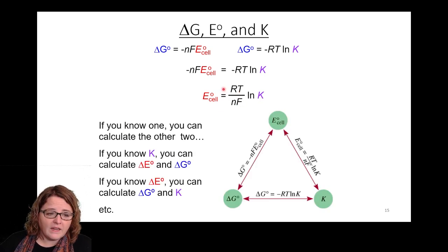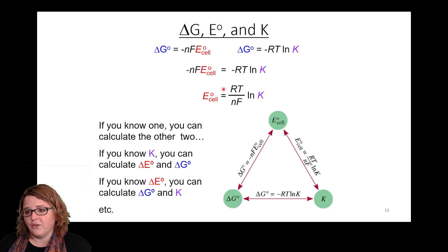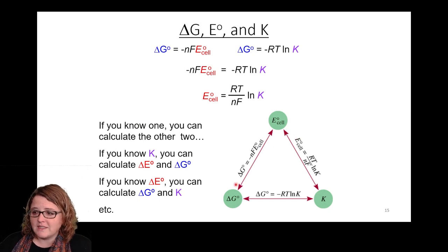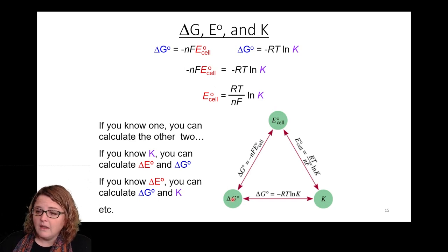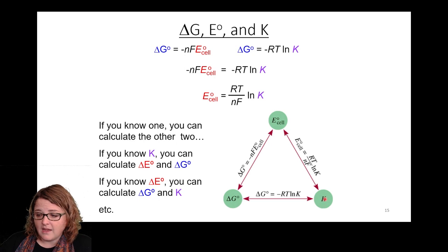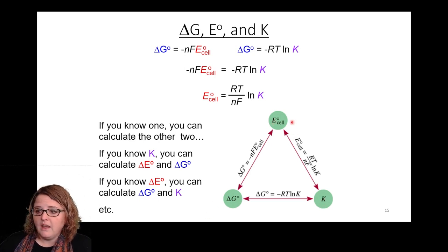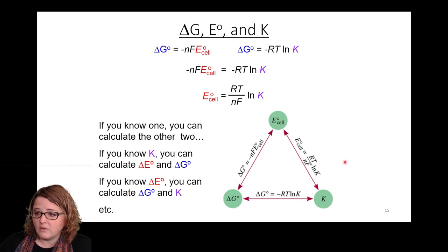We also have ΔG° = −RT ln K from last time. Equating these two expressions and solving gives E° = (RT/nF) ln K. So once I know one quantity, I can calculate the other two. If I know ΔG°, I can calculate both E° and K. If I know K, I can calculate ΔG° and E°. If I know E° and the reaction, I can calculate ΔG° and K.